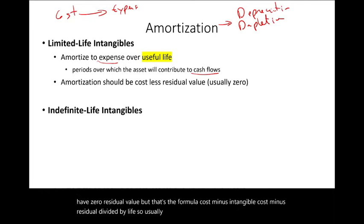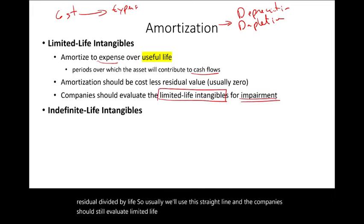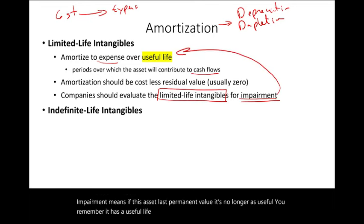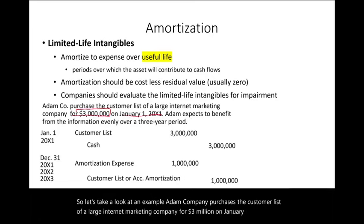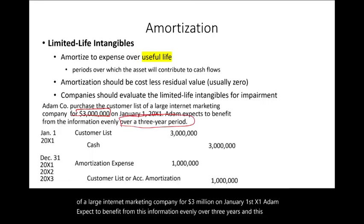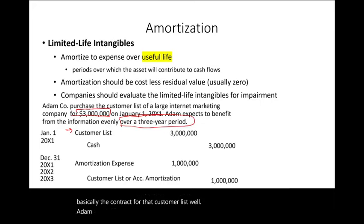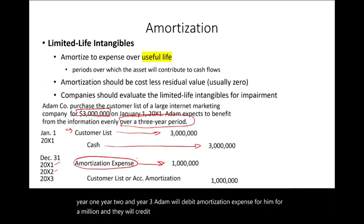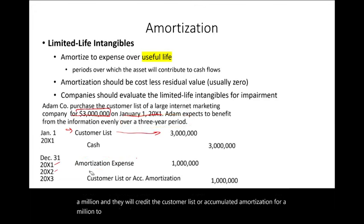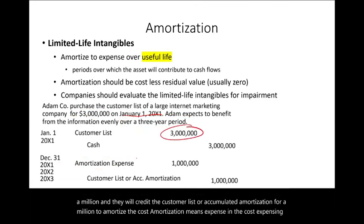Companies should still evaluate limited-life intangibles for impairment — if the asset lost permanent value and is no longer as useful, you must do impairment testing. For example: Adam Company purchases a customer list for $3 million on January 1, X1, and expects to benefit evenly over three years. Adam debits customer list $3 million and credits cash $3 million. Then at the end of each of the three years, Adam debits amortization expense $1 million and credits the customer list or accumulated amortization $1 million — amortizing the $3 million cost over three years.